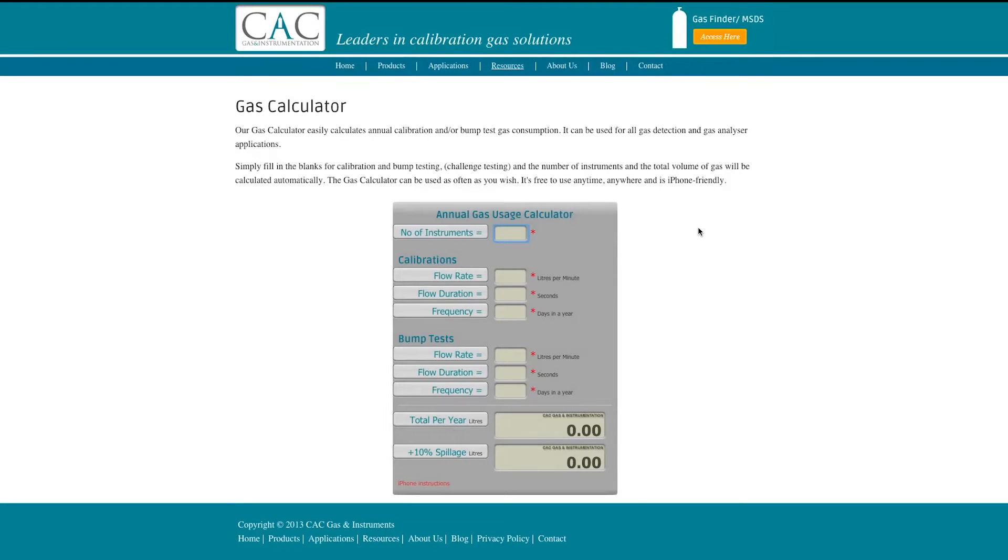Using the CAC gas calculator, simply enter the relevant information in the boxes provided. Enter the number of instruments. For calibrations, enter the flow rate, the duration, and the frequency. For bump tests, also enter the flow rate, the duration and the frequency. The gas calculator will automatically calculate the annual gas usage of the customer.